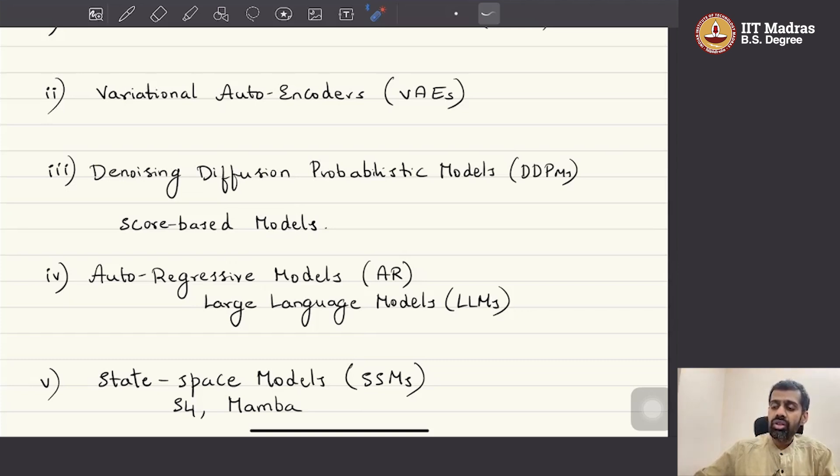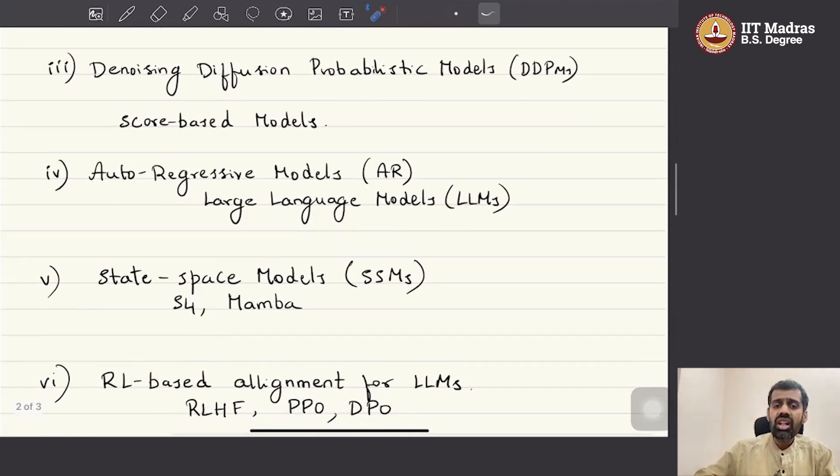Another member of generative models that is very closely related to diffusion models are what are called as the score-based models. We will also look at how score-based models operate.